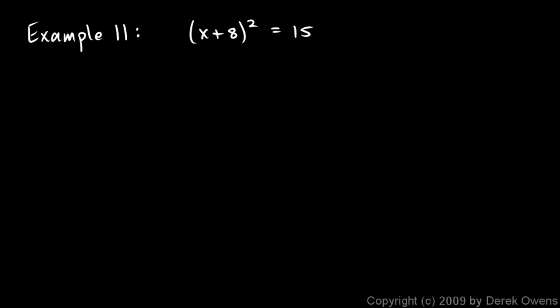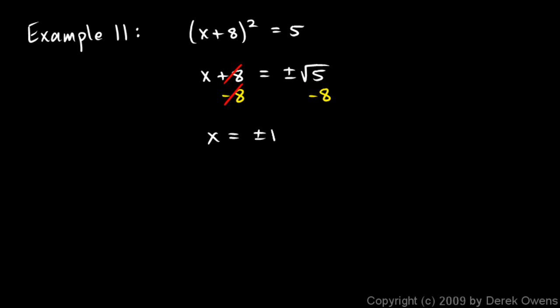Here's another example, example 11: x plus 8 squared equals 5. So let's take the square root of each side. On the left I just have x plus 8 after square rooting it. On the right I have plus or minus the square root of 5. Now we'll subtract 8 from each side, and so I get x is equal to plus or minus the square root of 5 minus 8.